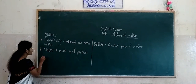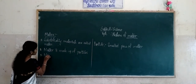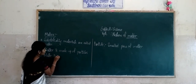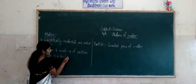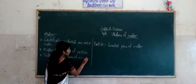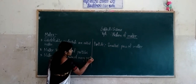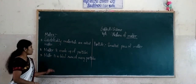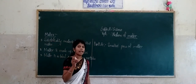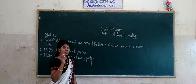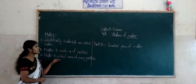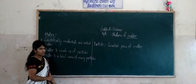By combining both points, we can write in definition form: matter is a total sum of many particles. What is the meaning of matter? Matter is a total sum of many particles. We know that chalk is made up of particles.